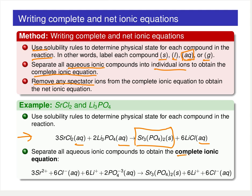To form the complete ionic equation, we break apart all of the compounds that have aqueous associated with them. So we've got aqueous strontium chloride and aqueous lithium phosphate broken into their respective ions. The lead chloride — sorry, the strontium phosphate — is going to form a solid, while the lithium and chloride ions are still just going to be floating around. Leaving all of those ions with their respective designations gives us the complete ionic equation.